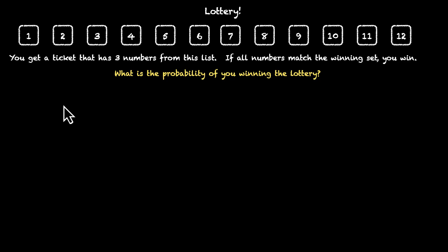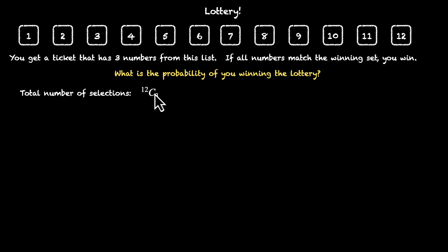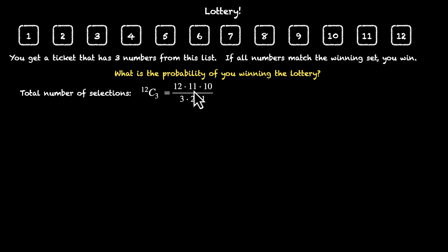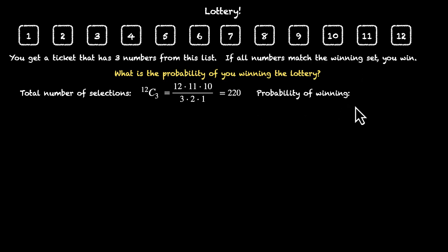Let's do this together. How many total tickets are possible? We're picking three numbers out of these 12, so the total number of selections is 12C3. It doesn't matter in which order we pick the numbers — a ticket could have 3, 4, and 5, and the order doesn't matter. So total number of selections is 12C3, which equals 12×11×10 divided by 3×2×1. Dividing 12 by 6 gives 2; 2 times 11 is 22, times 10 is 220. So there are 220 different tickets. There is one ticket that matches the winning set, so the probability of winning is 1 divided by 220, which is approximately 0.45%, or slightly less than 0.5%.